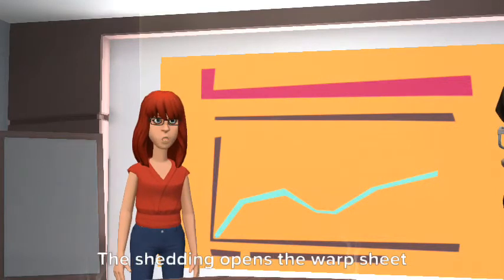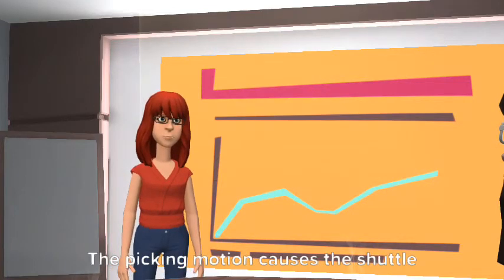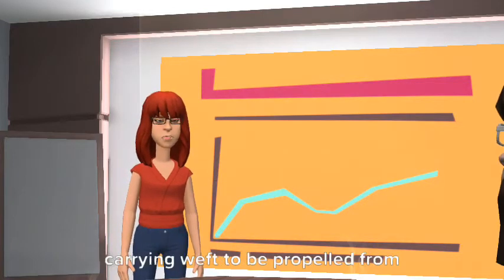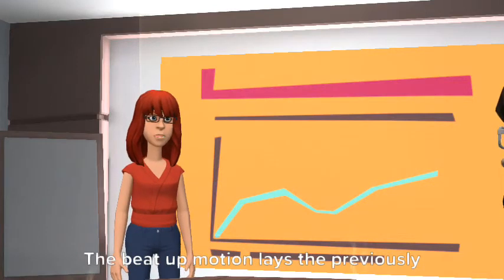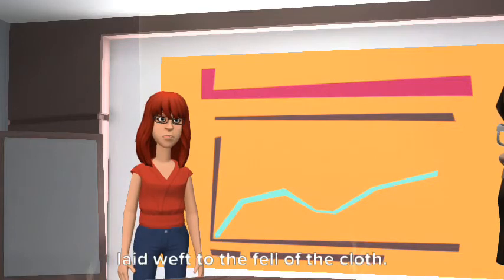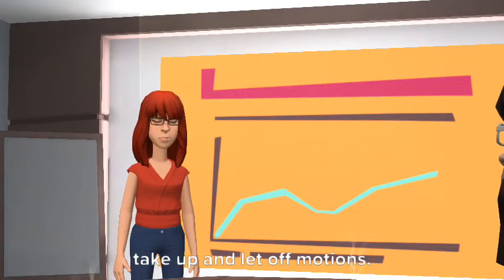The shedding opens the warp sheet in two layers to facilitate passage of shuttle. The picking motion causes the shuttle carrying wefts to be propelled from one end of loom to another. The beat up motion lays the previously laid wefts to the fell of the cloth. The secondary motions comprise of take up and let off motions.